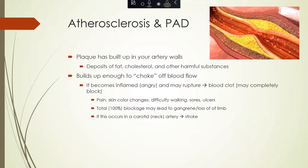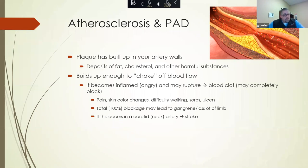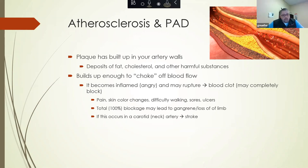The plaque can become inflamed and sometimes may rupture, which leads to a blood clot that may completely block that artery. If that happens, you will often develop pain, significant color changes in the affected limb, difficulty walking, and sores and ulcers that do not heal. If that blockage becomes 100% or total and is left untreated, it may often lead to gangrene or loss of that limb by amputation. If this complete blockage occurs in one of the neck arteries or your carotid artery, it often leads to a stroke.